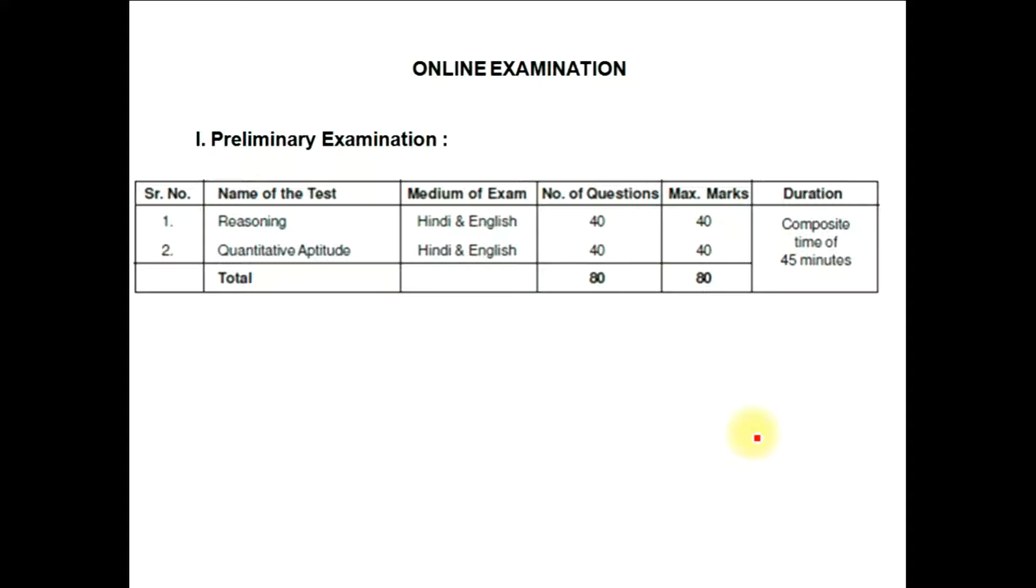In preliminary examination, as in IBPS PO or clerk, in preliminary there will be three topics, but in RRB they are conducting only two topics: reasoning and quantitative aptitude that will be in Hindi and English mode. Number of questions in each section is 40 and total will be 80, marks also carrying each question one mark in both sections for a total of 80 marks, and composite time you are getting is only 45 minutes, not one hour.